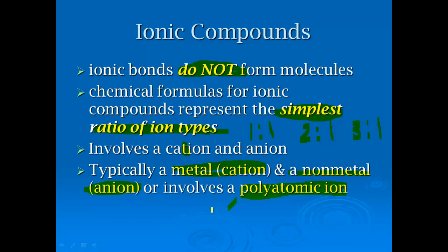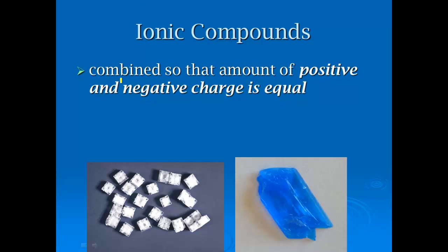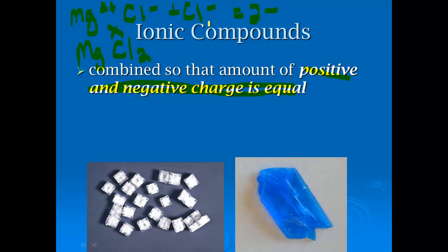If you have more than two types of atoms, for the purposes of this class, that's when you can think you're dealing with a polyatomic ion. Ionic compounds are combined so that the positive and negative charges are equal — for example, when we combine magnesium (2+) and chloride (1−), we get MgCl₂ so that the two minus charges of the chlorides cancel out the two plus charges.